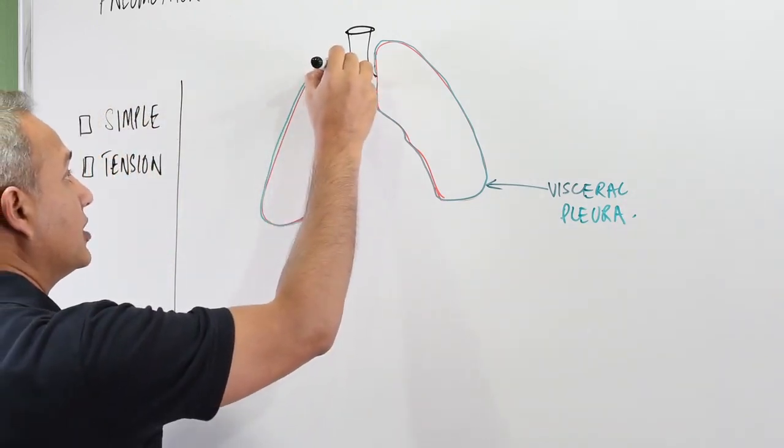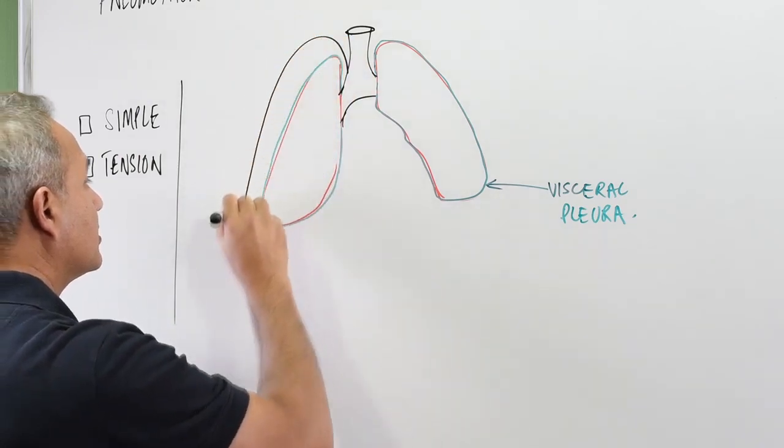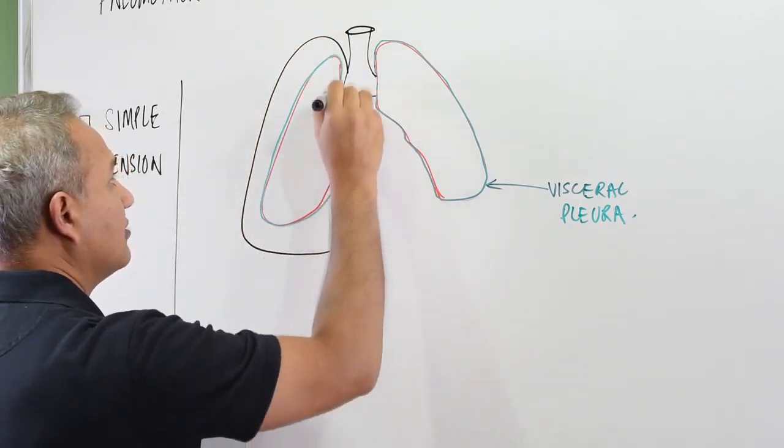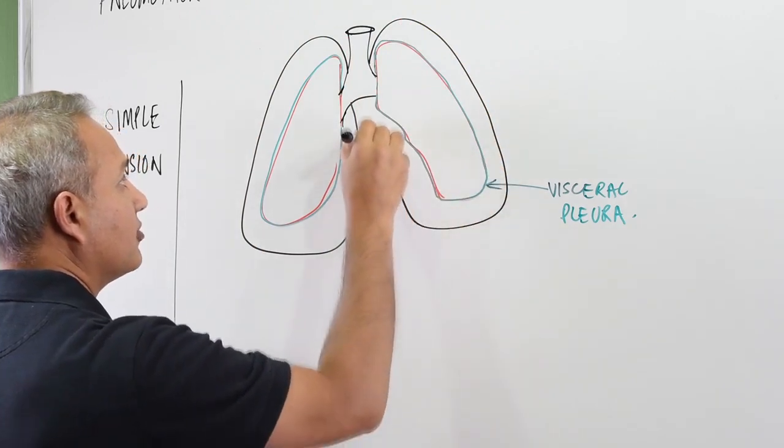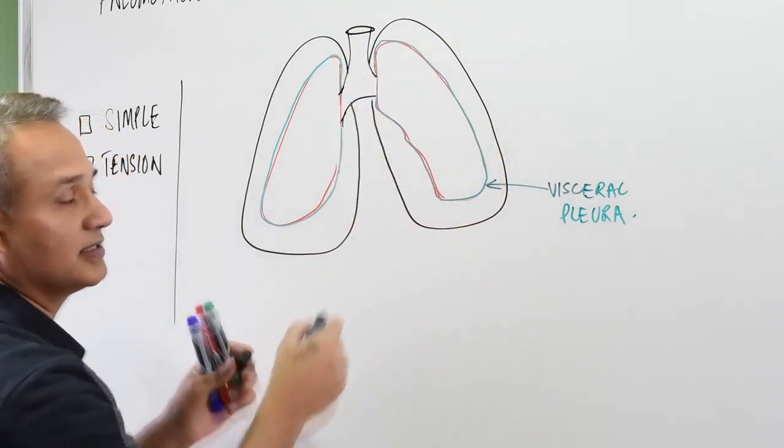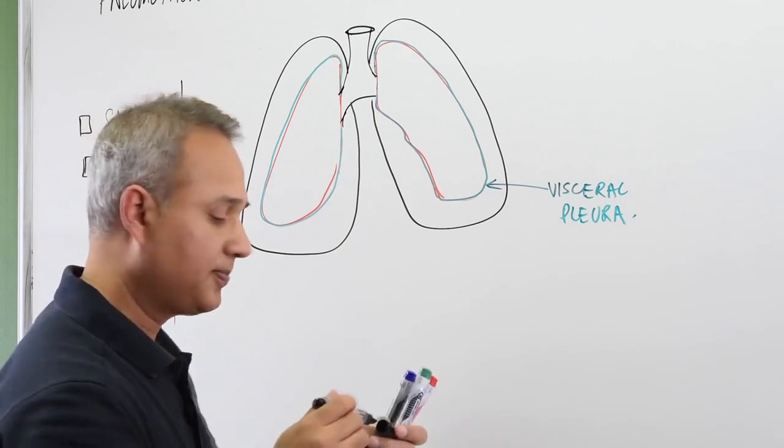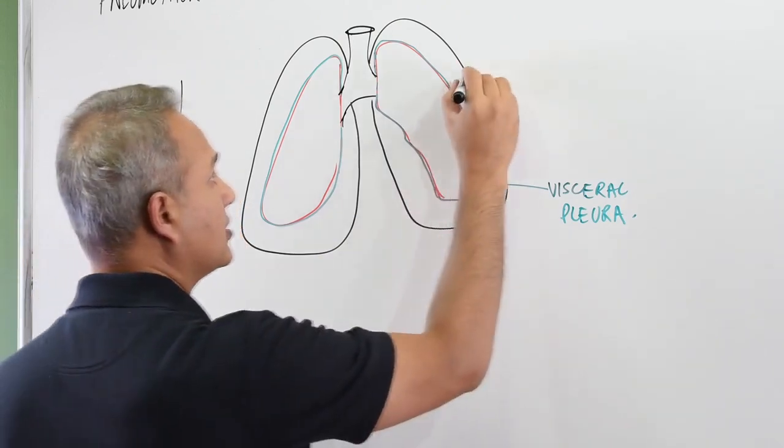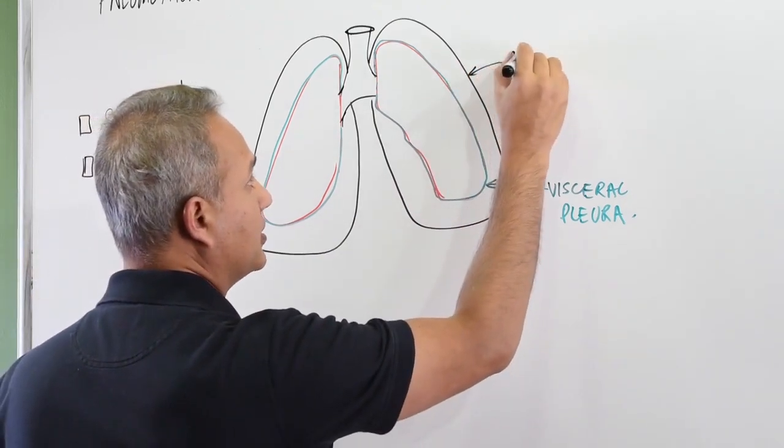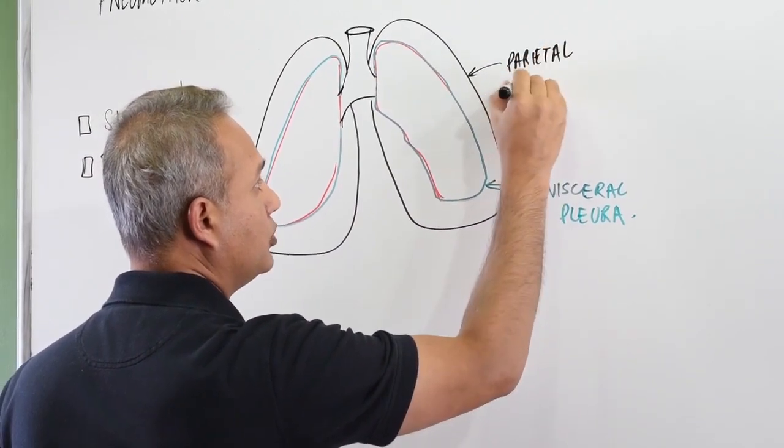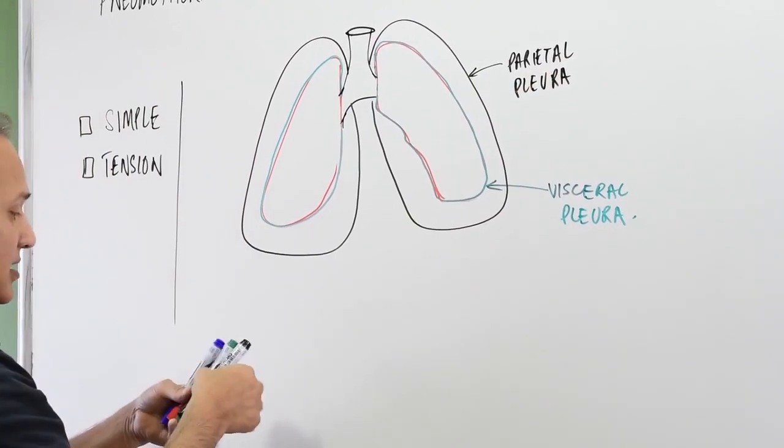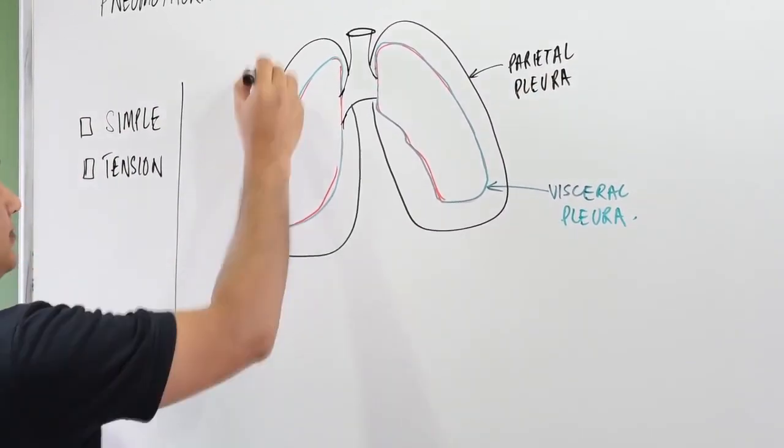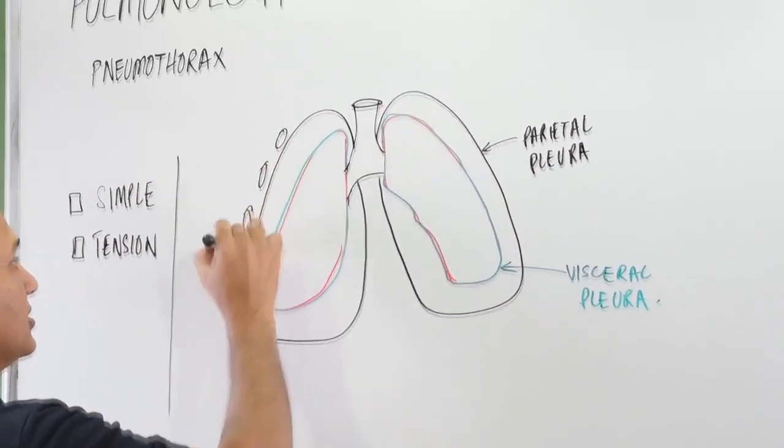And then there is the parietal pleura that is not connected with the lungs. Instead, lungs are sort of floating in it freely and the parietal pleura is then connected with the chest wall.